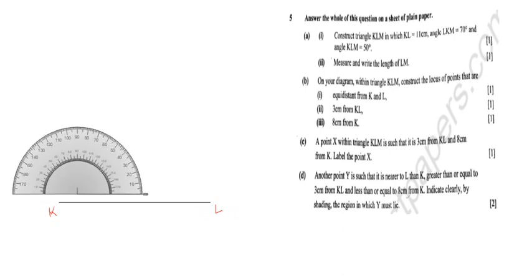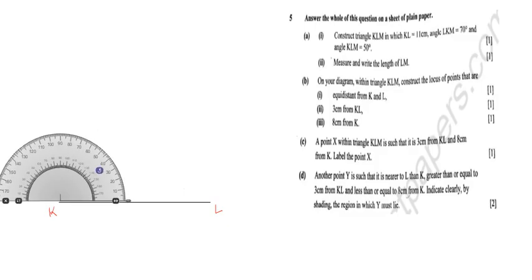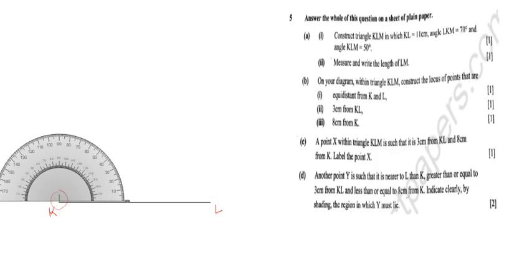I'll place the protractor right at point K. The key thing about using a protractor is that the center point must be exactly at the end of the line where you want the angle. If the angle is below 90 degrees, you start from one side up to 90. Since 70 degrees is below 90, I can see that 70 is somewhere here — equivalent to 110 on the other scale. I'll put a small mark at 70 degrees.